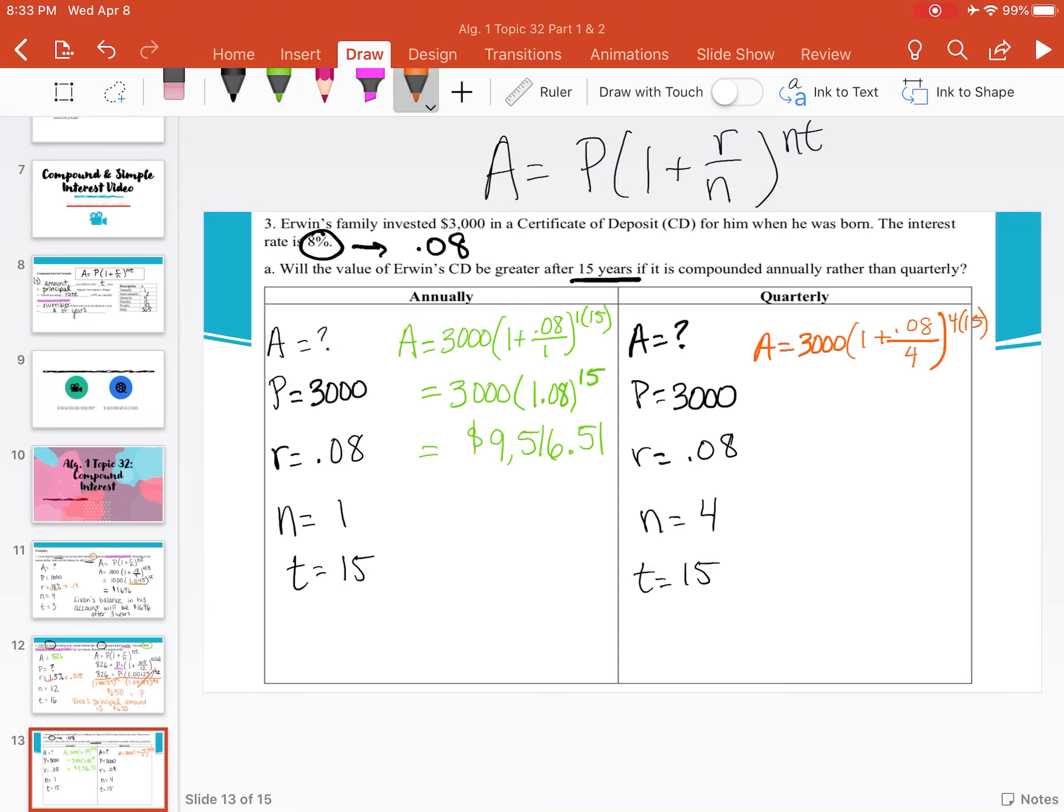Now let's compare this to quarterly. For quarterly, we have 3000 times 1 plus 0.08 divided by 4 to the 4 times 15. We know we're still going to have 3000. And we can simplify our exponent too. 4 times 15 is 60. I think about a clock, there are four 15 minute sections in an hour, which is 60 minutes.